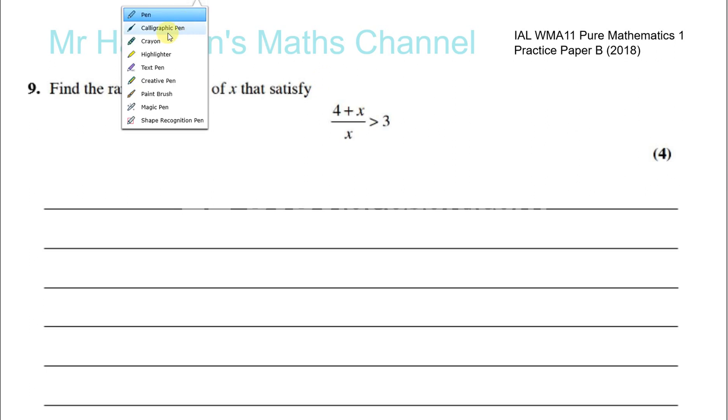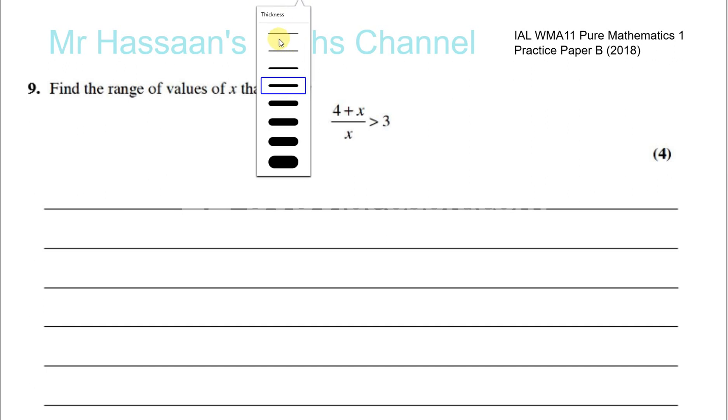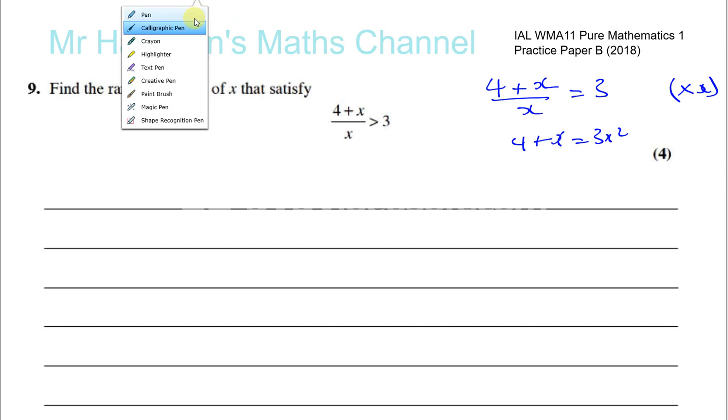We have to be careful in this type of problem. If this was an equation, if it was just 4 plus x over x equals 3, then we could multiply both sides by x, and then we'd get 4 plus x equals 3x squared, and then we can proceed to solve this quadratic equation. However, this is not an equation, this is an inequality.